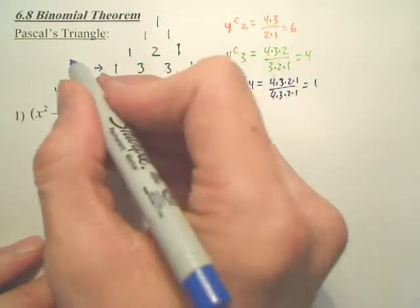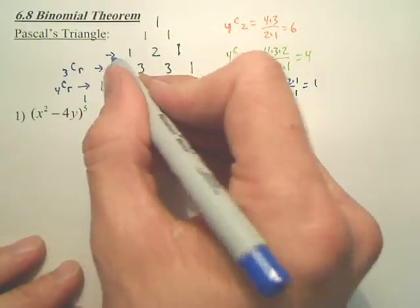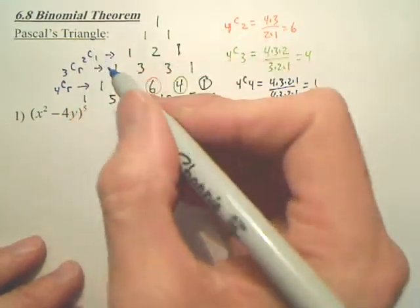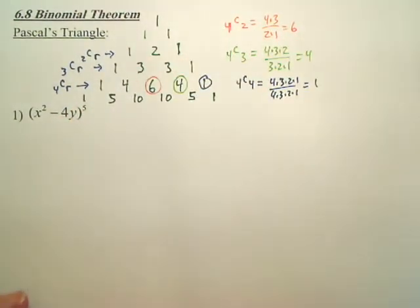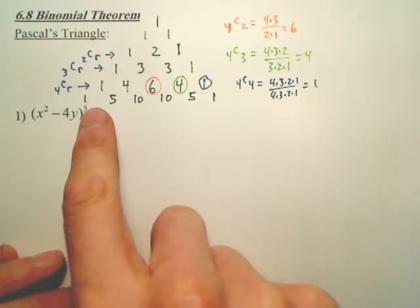This column is your 3CR? Sorry, row. I should say row. This row is your 2CR? What's this column? Your 5Cs?